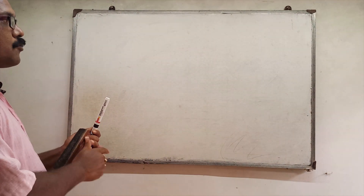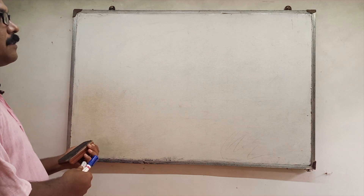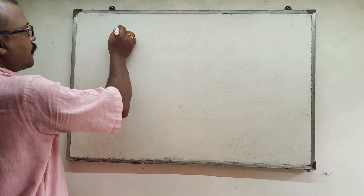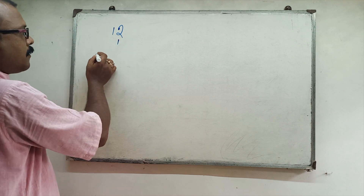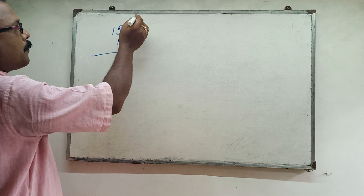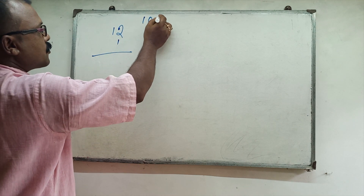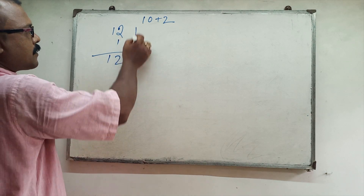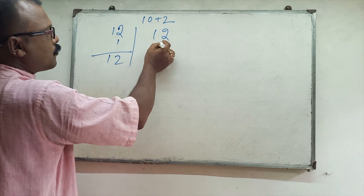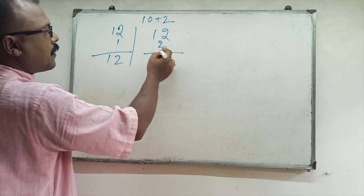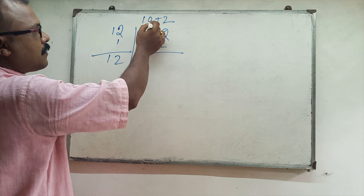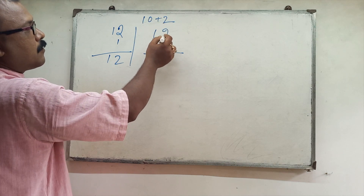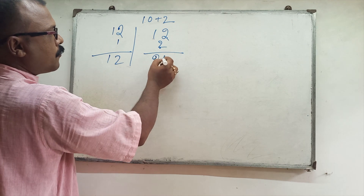Let's look at the first example. I am talking about the 12 tables. So 12 means 10 plus 2. 12 ones are 12. 12 twos are: 10 twos are 20 and 4, so 24.